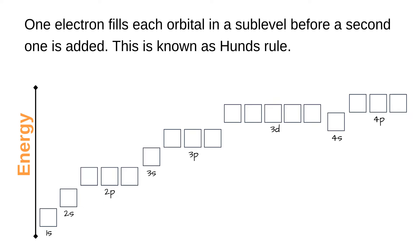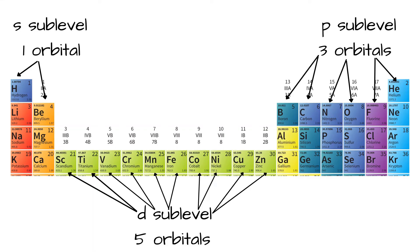So if electrons are filling the p orbitals, one electron would be added to each of the three orbitals before the second electron was added to each orbital. The valence electrons in group 1 and 2 elements are found in the s orbital. The valence electrons of groups 13 through to 18 are found in the p orbitals, and the transition metals have their valence electrons in the d orbitals.